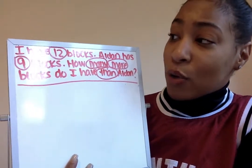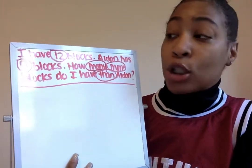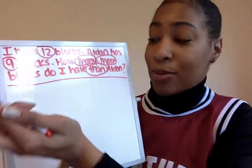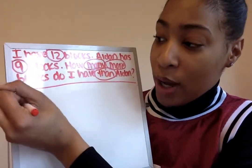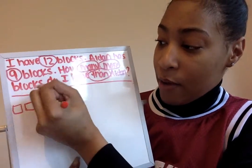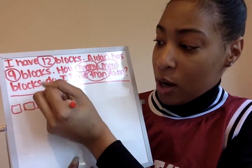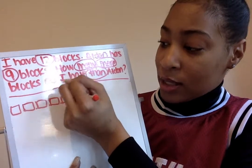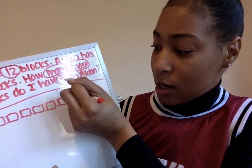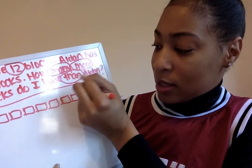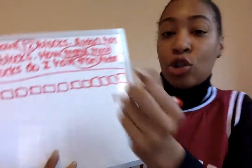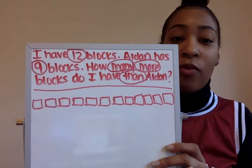The first thing I'm going to do is draw 12 blocks. I'm going to draw squares to represent the blocks — one, two, three, four, five, six, seven, eight, nine, ten, eleven, twelve. So now I have 12 blocks.